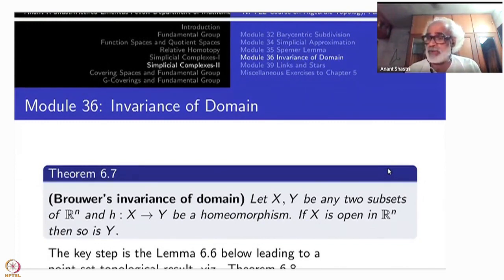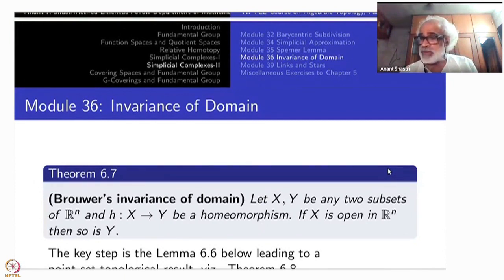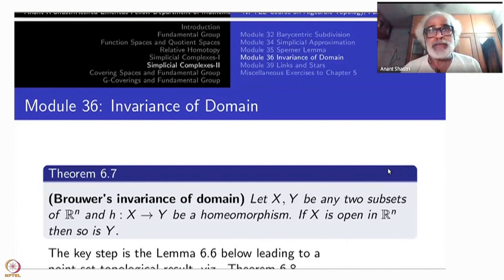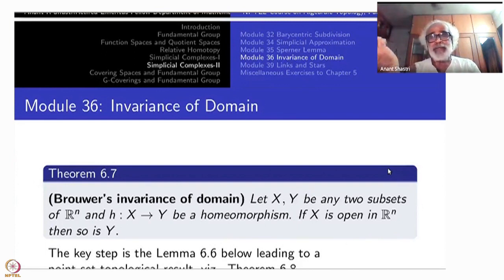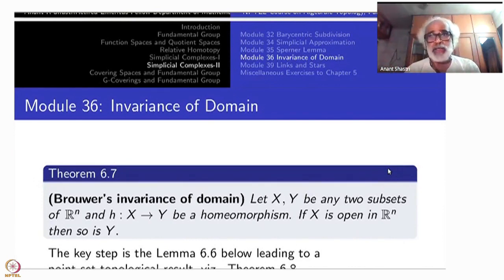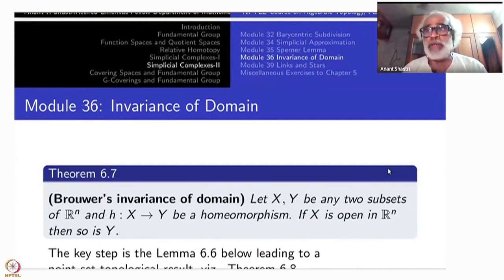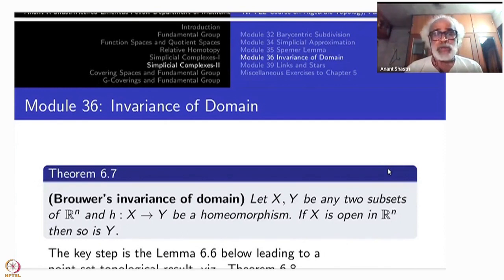An interior point is a concept of an embedded object X contained inside R^n. If you take just a topological space, the interior of X is the whole of X, but X as a subset of R^n has a different interior. This interior is independent of how X is contained in R^n — that is what we are going to achieve, which is actually much stronger than invariance of domain itself. Invariance of domain will be caught as a corollary.